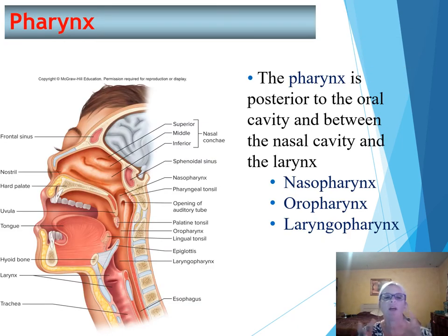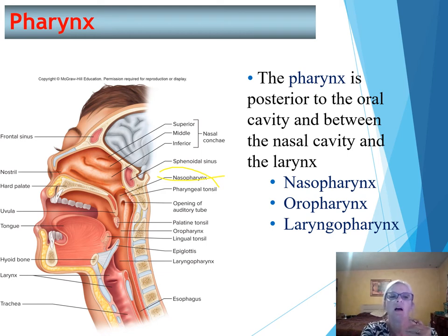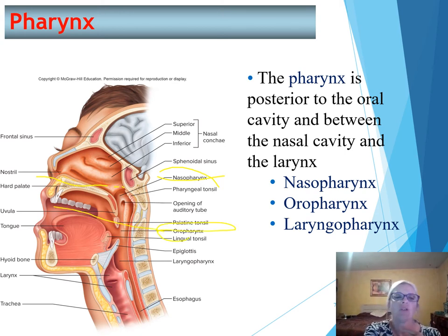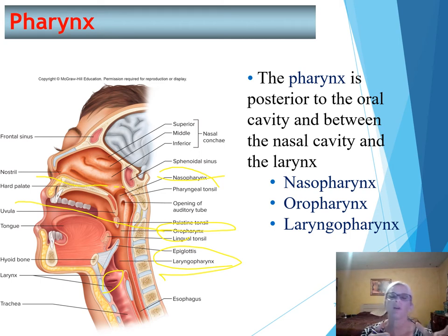The pharynx is just behind the oral cavity and between the nasal cavity and the larynx. It has three sections: the nasopharynx is the upper portion — think nasal, nose — situated just below the bottom of the nose. The oropharynx — think oral — is situated just below the mouth. The laryngopharynx is at the bottom, situated just above the larynx. This is a passageway for food moving from the oral cavity to the esophagus and for air passing between the nasal cavity and the larynx.